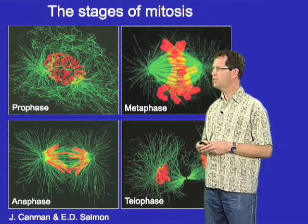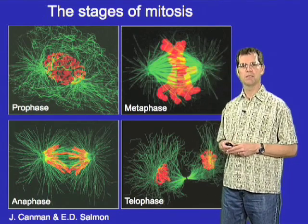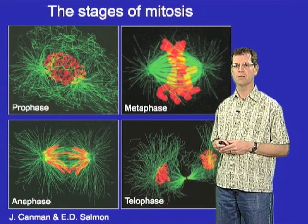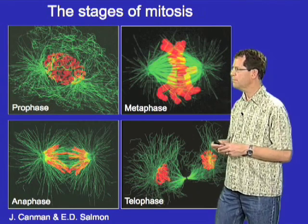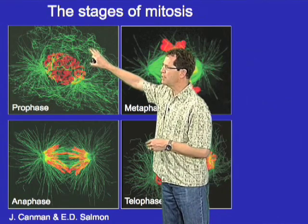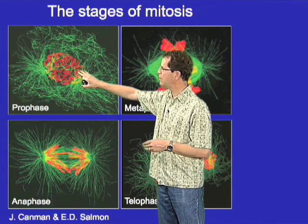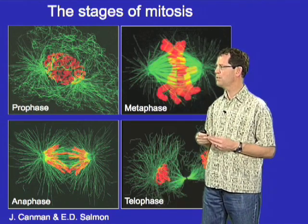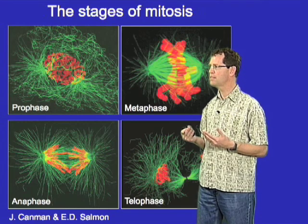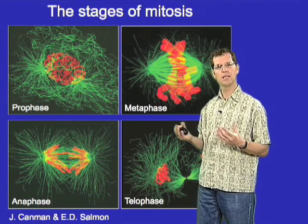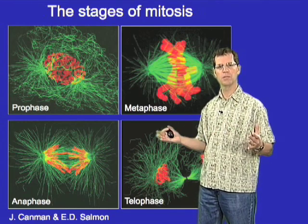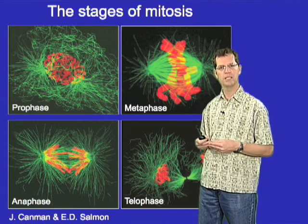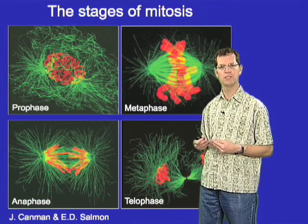This next slide gives a little more detail about the process of mitosis. Mitosis typically begins with the stage called prophase, shown in the upper left. Prophase is distinguished by the fact that chromosomes inside the cell nucleus begin to condense from their normally dispersed state into a much more compact rod-like structure that is more easily manipulated during mitosis.